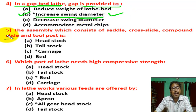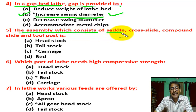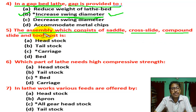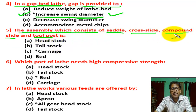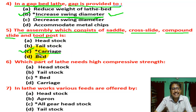Question number five: the assembly which consists of saddle, cross slide, compound slide, and tool post — consists of all these components. There are four options. Correct answer is C — carriage. In carriage, all these components are assembled.